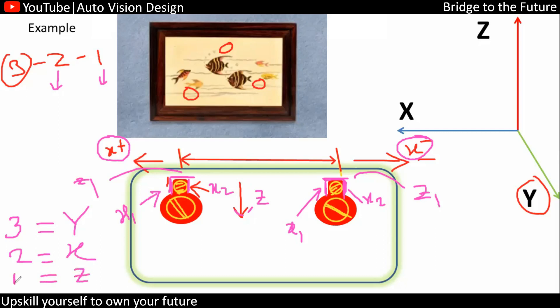So this is the 3-2-1 principle — it is applicable here. 3 points from the wall in Y, 2 points from the side surfaces in X, and 1 point from the top. This is a day-to-day life example. You can correlate the 3-2-1 principle — any two parts that get assembled need to follow the 3-2-1 principle.